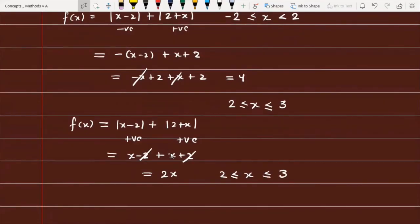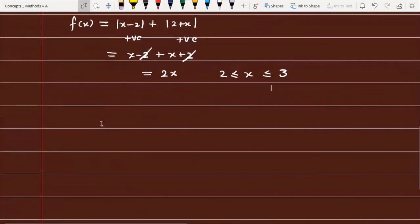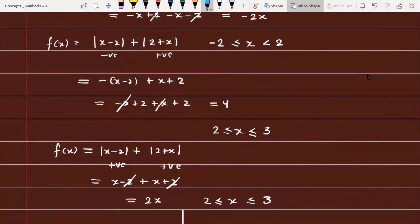Finally, we have defined the function. f(x) equals mod of x minus 2 plus mod of 2 plus x can be written as: minus 2x when x is greater or equal to minus 3 but less than minus 2; when x's value is in the middle interval, the function changes; and 2x for the upper interval.